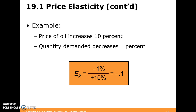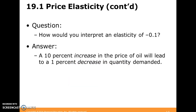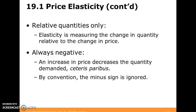Here's an example you might want to look at. The price of oil increases by 10 percent and quantity demanded increases by one percent. Using the formula, the answer is minus 0.1. So how would we interpret this number? The intuition is: a 10 percent increase in the price of oil will lead to a one percent decrease in quantity demanded. Elasticity is measuring change in quantity relative to a change in price. It's always going to be negative for demand because we have a downward sloping curve — an increase in price decreases quantity demanded, all else constant.